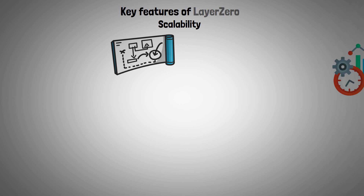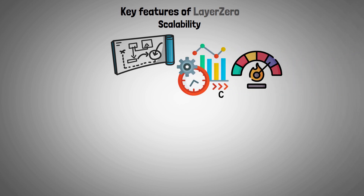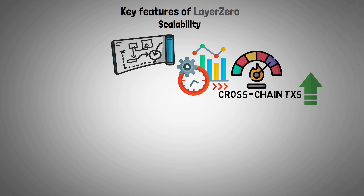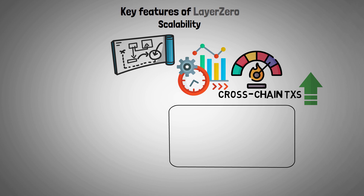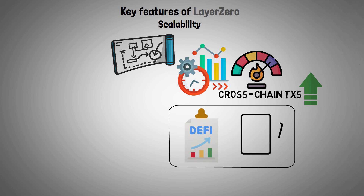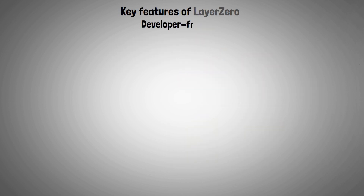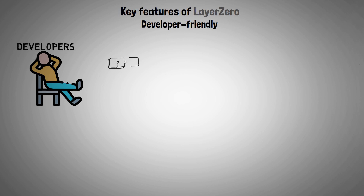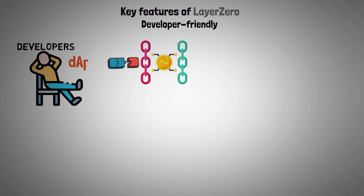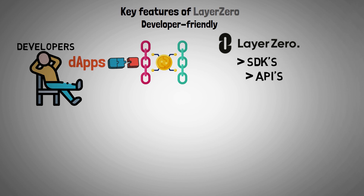In terms of scalability, because of its effective design, the protocol can manage a high volume of cross-chain transactions without experiencing any bottlenecks. The increasing need for cross-chain interactions, particularly in fields like decentralized finance and NFTs, requires this scalability. Layer 0 is also developer-friendly, offering a range of software development kits and APIs to make it simple for developers to incorporate cross-chain functionality into their dApps.